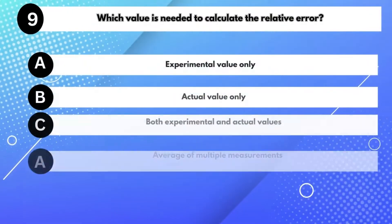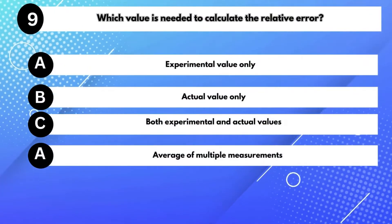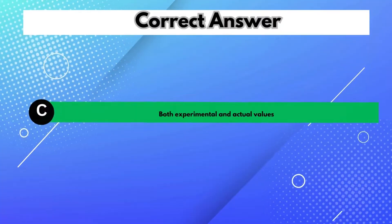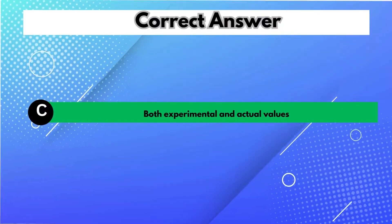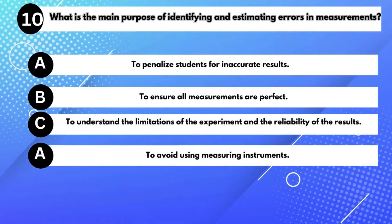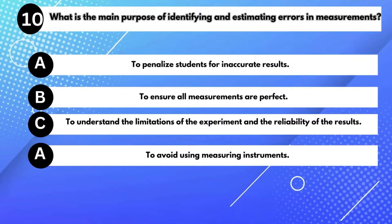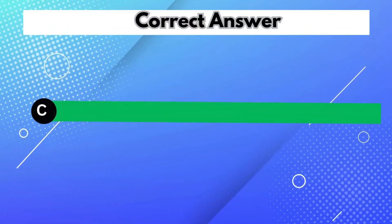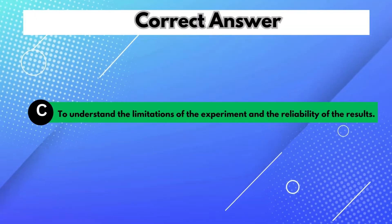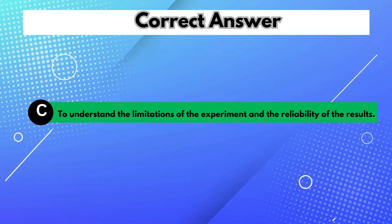Which value is needed to calculate the relative error? Answer C: Both experimental and actual values. What is the main purpose of identifying and estimating errors in measurements? Answer C: To understand the limitations of the experiment and the reliability of the results.